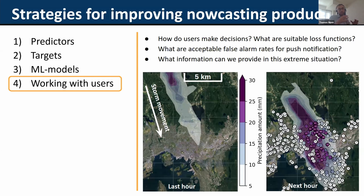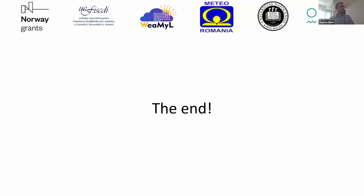Finally, we need to work with users — how do they make decisions, what are suitable loss functions representing how they make decisions, and what are acceptable false alarm rates? For example, if we have a push notification saying a heavy precipitation cell is coming, what false alarm rate can we accept? We don't think you can have that many false alarms before people start turning it off — it has to be quite accurate otherwise it's not that useful. Here's an example of a heavy precipitation cell on radar — almost 40 millimeters in one hour, which is quite a lot for Norway. Thinking about how end users will make decisions is a very important aspect of improving these products. Thanks again for the invitation.